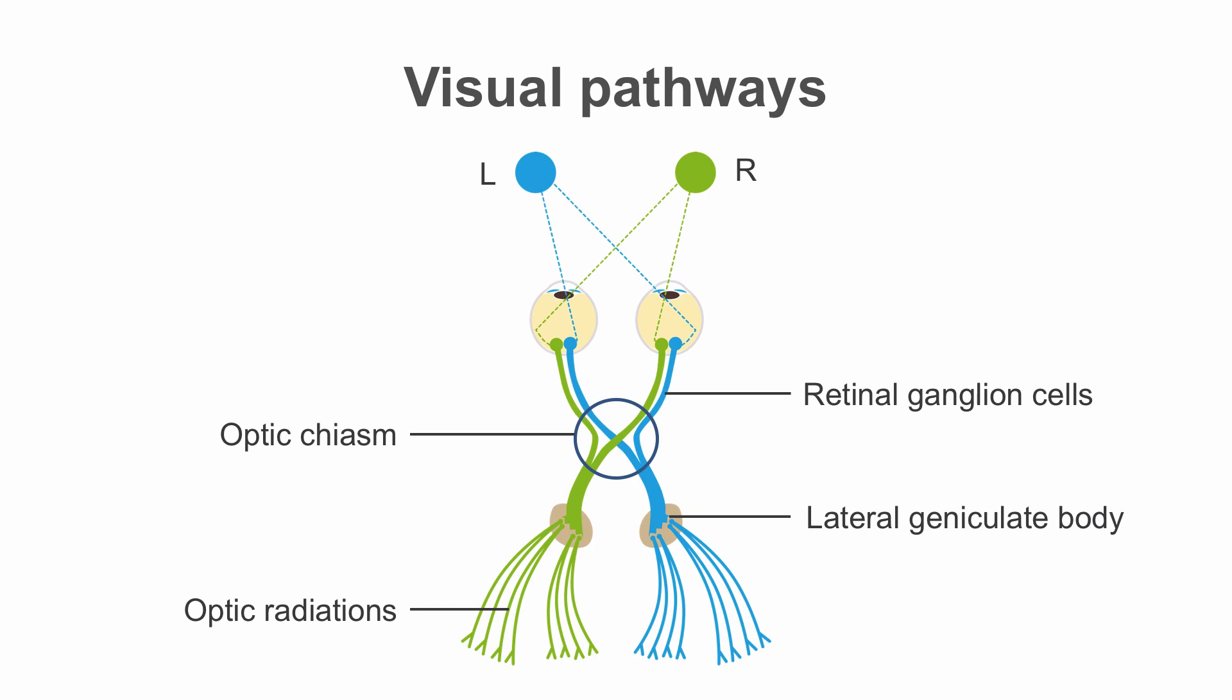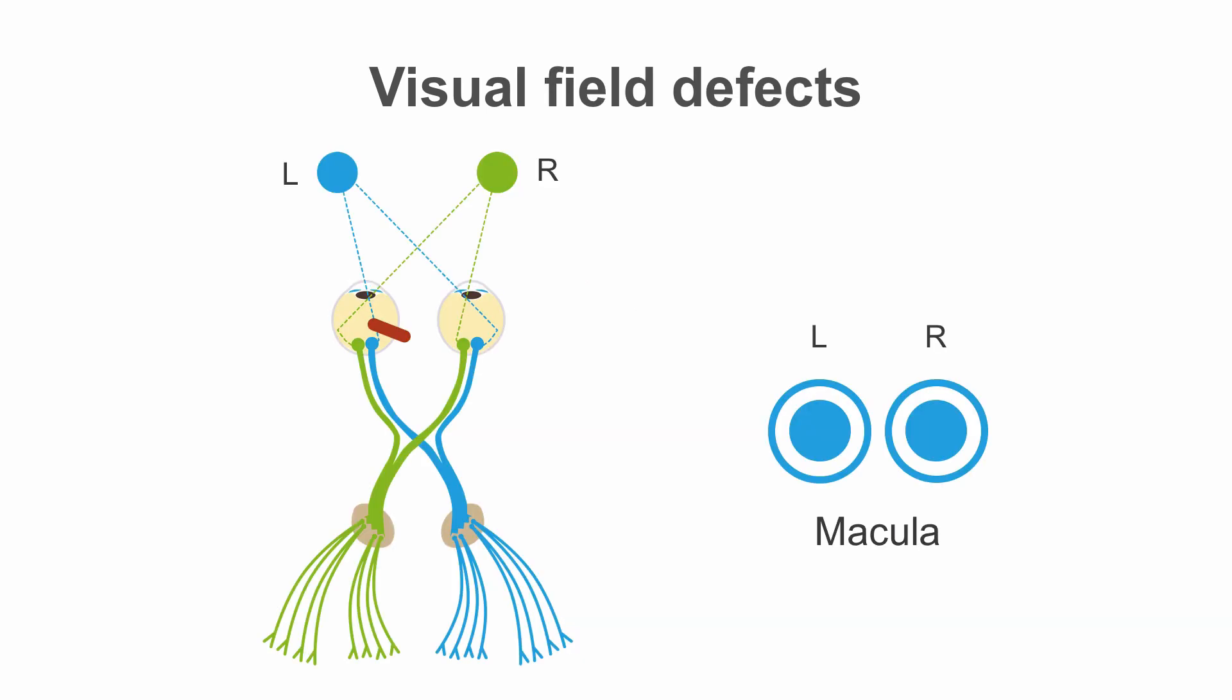Since the visual pathways travel through the temporal and parietal lobes before entering the occipital lobe, we need to consider the entire path in order to localize a deficit. You should begin by observing the portion of the visual field where the image strikes the retina.